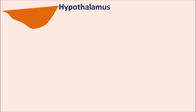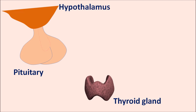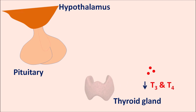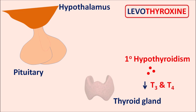The release of thyroid hormones is controlled by the HPT axis — the hypothalamus, pituitary, and thyroid gland. When the thyroid gland is not working properly, it releases only small amounts of T3 and T4, resulting in primary hypothyroidism with symptoms such as increased cold sensitivity, decreased heart rate, decreased basal metabolic rate, thinning of hair, dry skin, fatigue, and muscle weakness. In such conditions, levothyroxine can be given externally to control these symptoms.